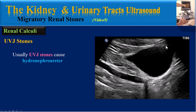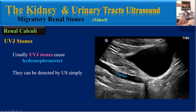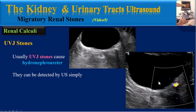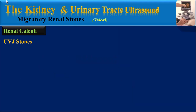Usually UVJ stones cause hydronephroureter. As you can see in this transverse abdominal ultrasound image from the bladder, here is the distal hydroureter, and the stones can be detected by ultrasound. We can see a stone with obvious acoustic shadowing. Also, if we use color Doppler ultrasound, we can find twinkling artifacts.